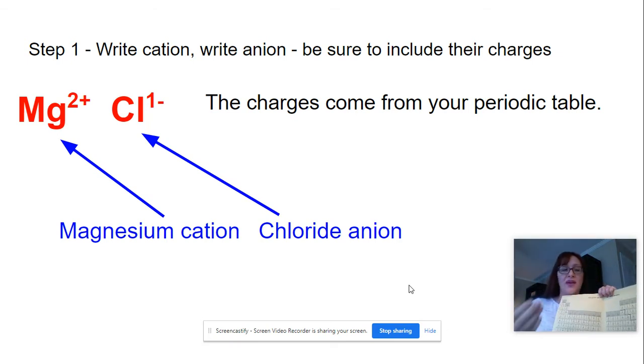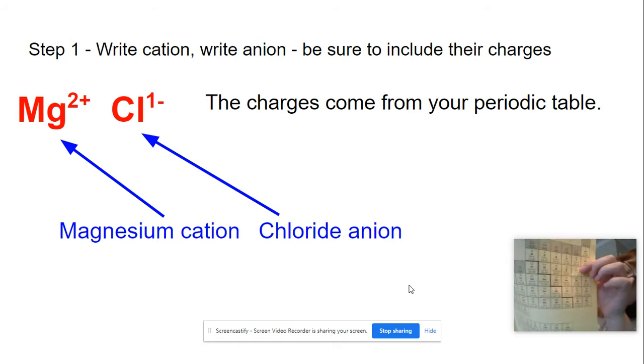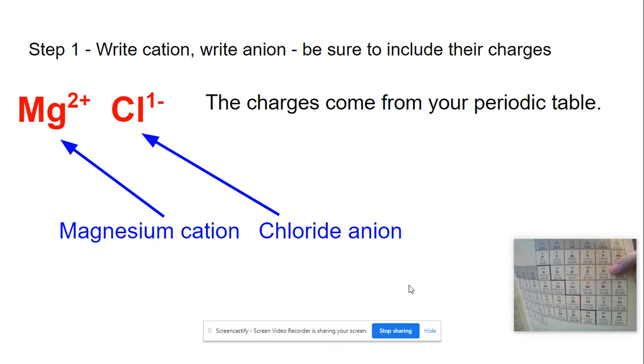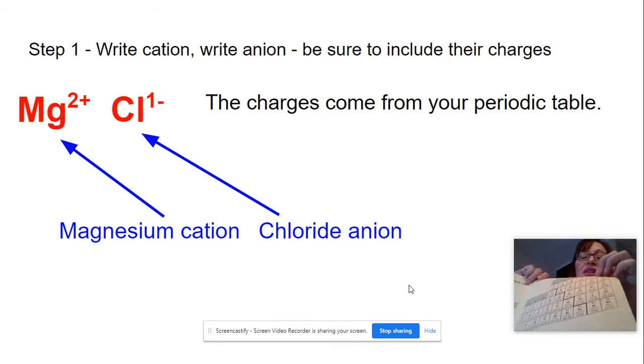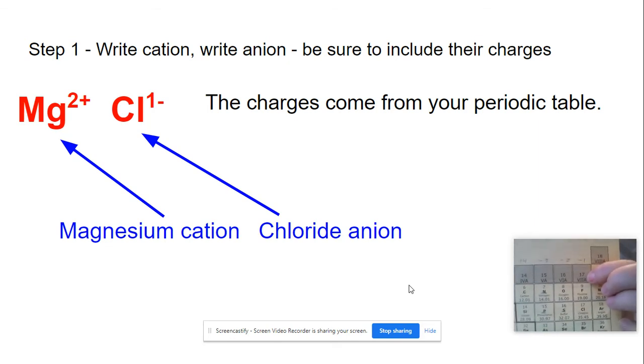Then you write your anion, and your anion is going to be a non-metal for ionic compounds. And so over here is my anion for chlorine, and I can see that if I look at the top of the column here, that its roman numeral is a 7.